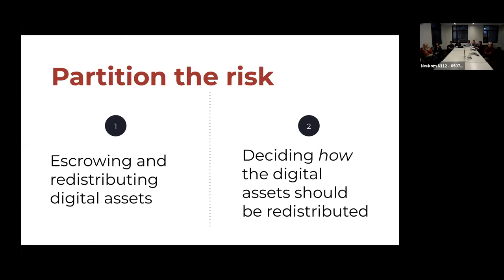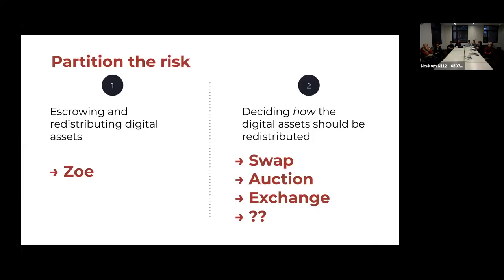What we're doing here is trying to partition the risk in smart contracts. There are really two roles. The first role is escrowing and redistributing digital assets. The second role is deciding how the digital assets should be redistributed. By escrowing, this means taking all the digital assets and holding them — and that's what our framework, which we call Zoe, does. For the second role, this is where your custom behavior or complex business logic comes in. This might be a simple swap, an auction, a digital exchange with an order book, complex mechanism design, or a negotiated contract that looks more like a legal contract.